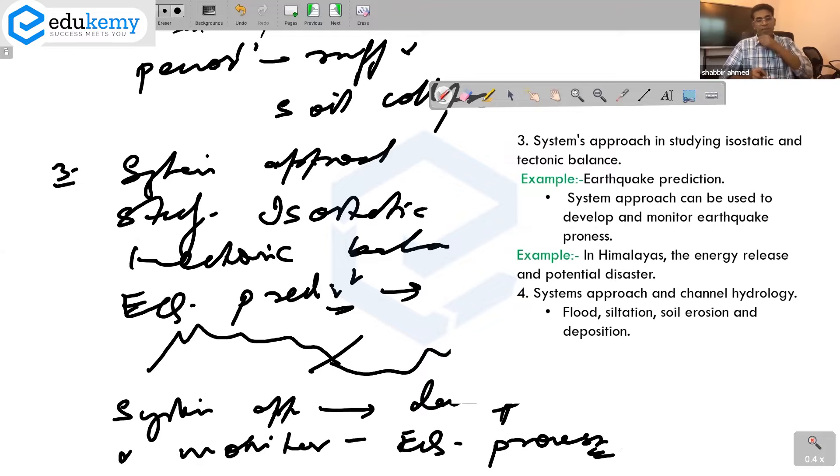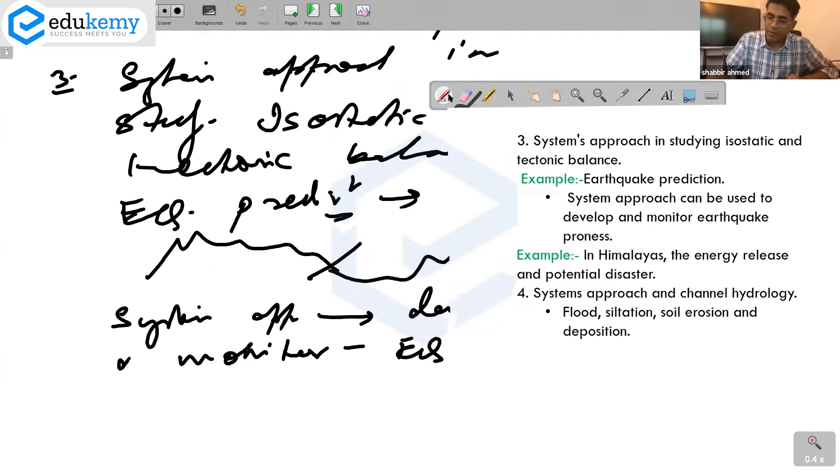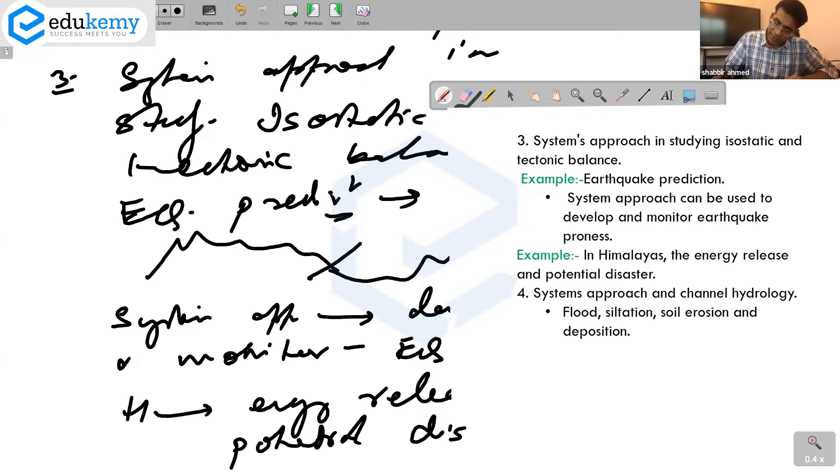They say Himalaya has made the energy release and potential disasters. They model this under earthquake prediction models. So use this for understanding tectonic balance and isostatic balance. This is your main application of systems.